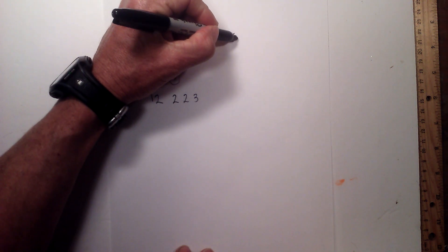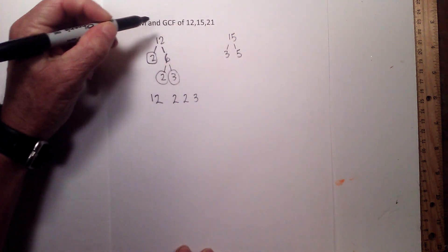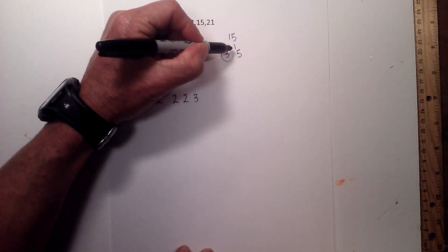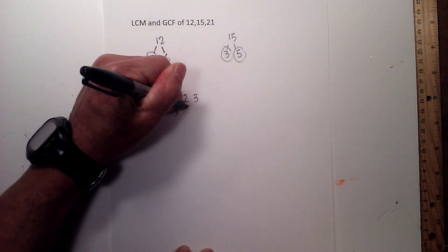Now let's go for 15, let's go 3 times 5 equals 15, they are both prime, so I will circle them. So 15 is 3 times 5.